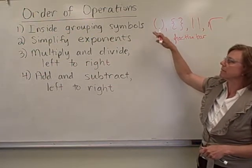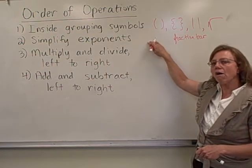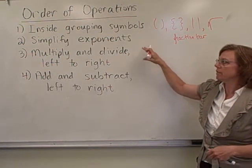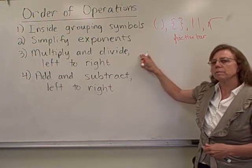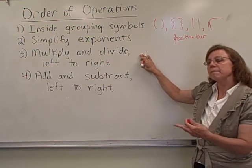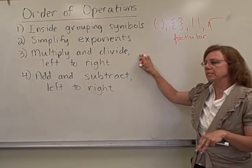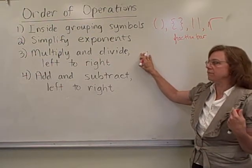After simplifying inside grouping symbols, then you simplify all exponents. And after that, when you've done all the exponents, you multiply and divide from left to right. So multiplication and division are on the same level of the order of operations, and you do all of those left to right.